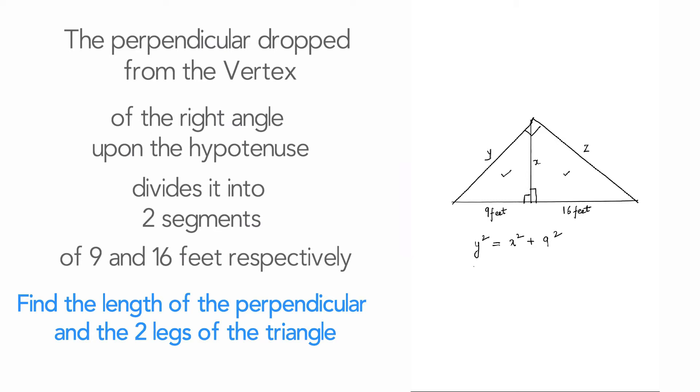And finally going to this outer triangle here and seeing that the hypotenuse is 25, we can say 25² = y² + z². And now we have three equations.